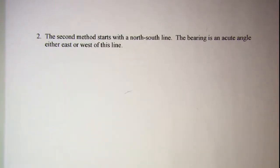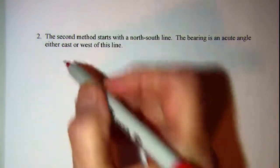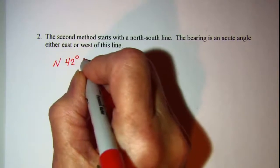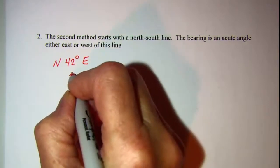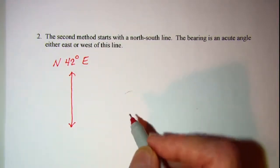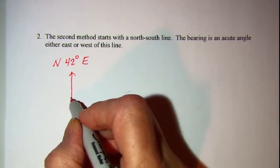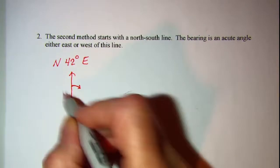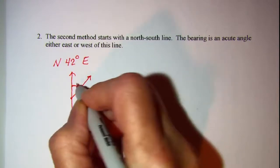The second method starts with the north-south line. The bearing is an acute angle either east or west of this line. So a bearing of north 42 degrees east would be, start with your north-south line and we want to go east 42 degrees, so east is clockwise and 42 degrees would be here.